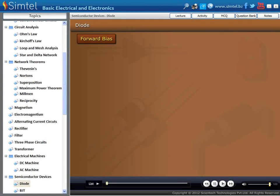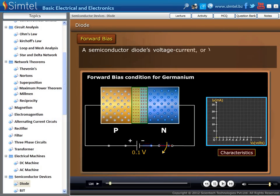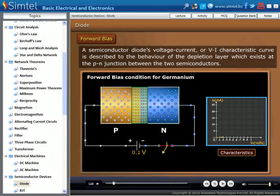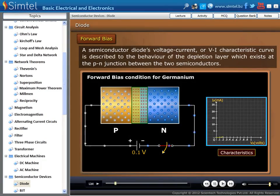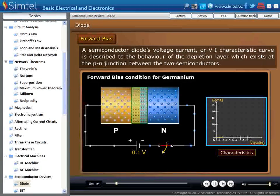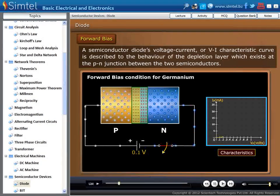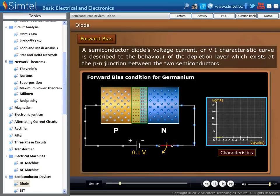Next we discuss characteristics of P-N junction diode. A semiconductor diode's voltage current, or VI characteristic curve is described to the behavior of the depletion layer which exists at the P-N junction between two semiconductors. First, we explain the forward bias characteristics.